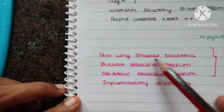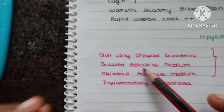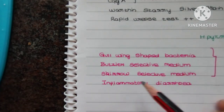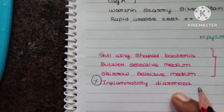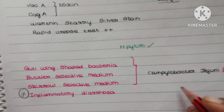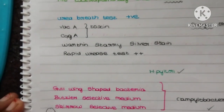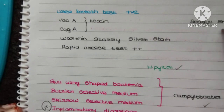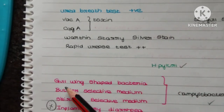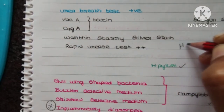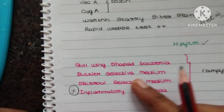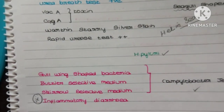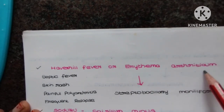The second organism: it is a gull-wing shaped bacteria, and the selective medium is Butzler's selective medium or Skirrow's medium. This organism causes inflammatory diarrhea, so the probable organism is Campylobacter jejuni. To remember: H. pylori is seagull-shaped — 'Heli in the sea' — whereas gull-wing shaped bacteria is Campylobacter jejuni.